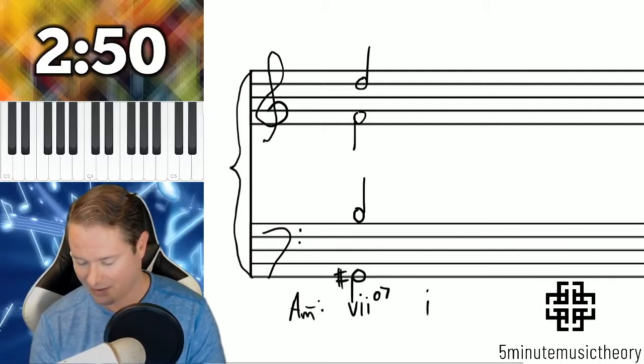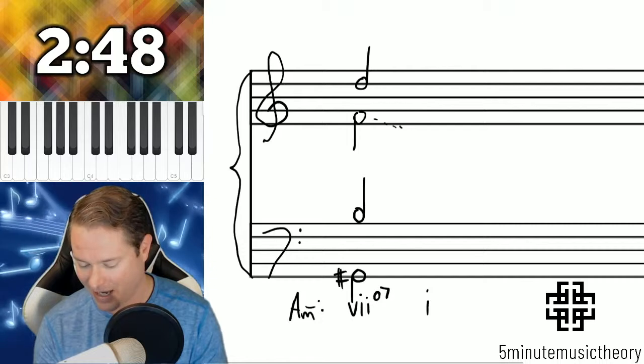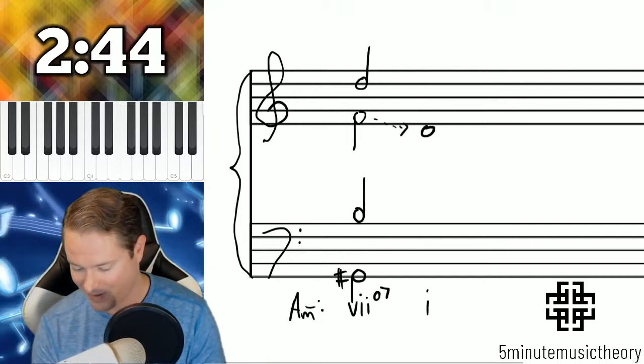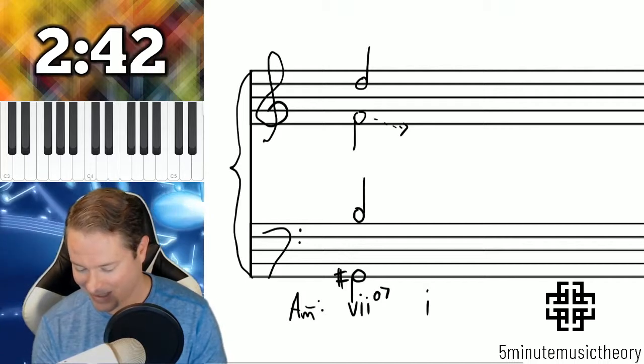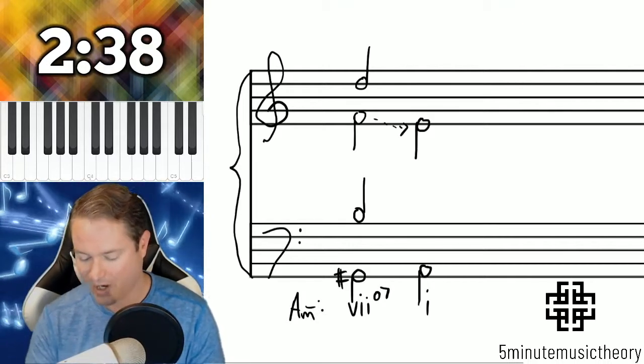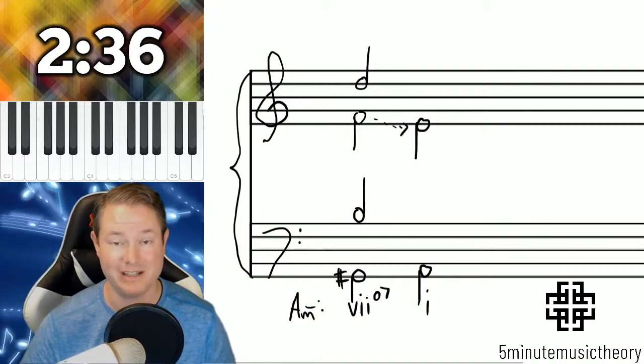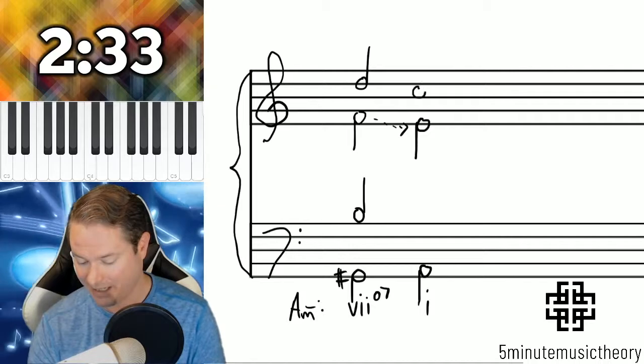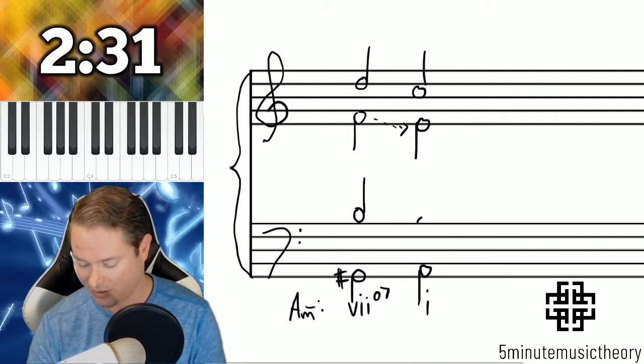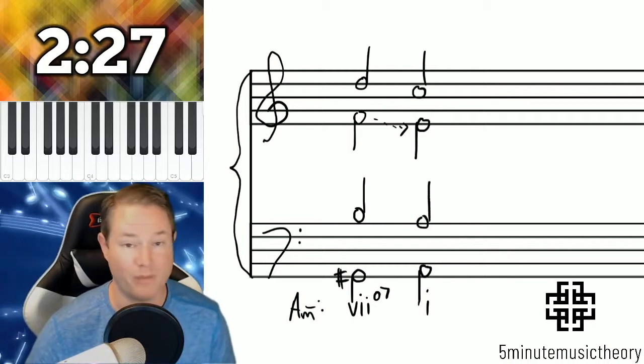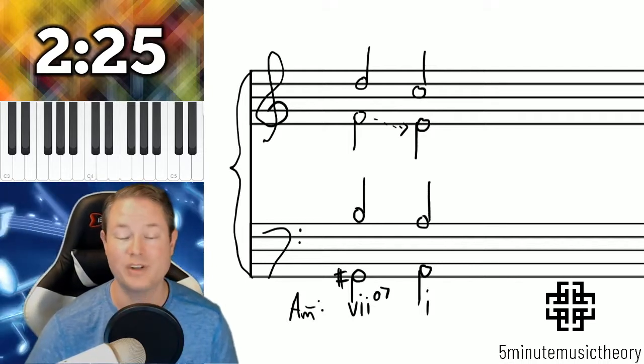The F is the chordal seventh, so it needs to resolve down by step, not to a D but to an E in the next chord. And this is going to be an A minor, so we have the A, we have the E, that leaves us remaining another A and a C. And just as we did in the other example, we can do it like this, and we have a nice beautiful leading tone seventh in both major and minor. It's pretty easy to deal with.